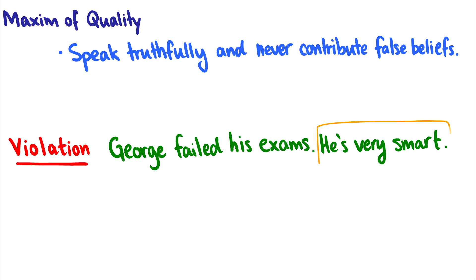Well, clearly, if he failed his exams, he's not very smart. So what is this? We violated the maxim of quality to do what? Well, to express sarcasm. Violations of quality can lead to sarcasm, or they can just lead to completely false beliefs or lies. But in this case, it's being used sort of in the sarcastic sense.